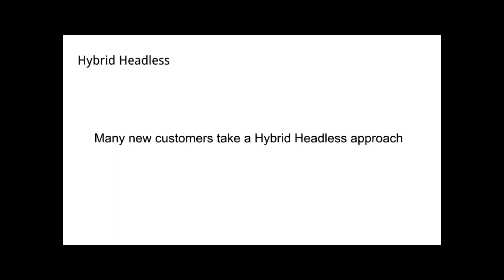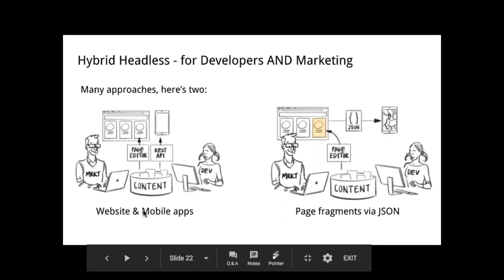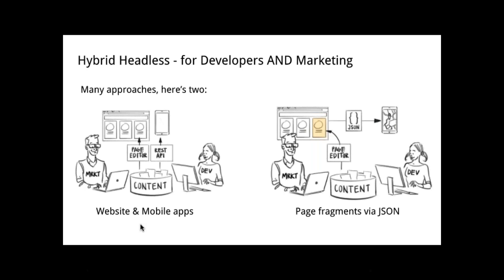Many of our customers — in fact, most of our customers doing headless — are really doing hybrid headless already. I'd like to show two examples of what this looks like, taken from a recent blog post about hybrid headless that goes through four different scenarios. On the left side, the simplest use case: I'm creating a website using the full Magnolia rendering, but I'm also sending that same content out to a mobile app or front-end applications.